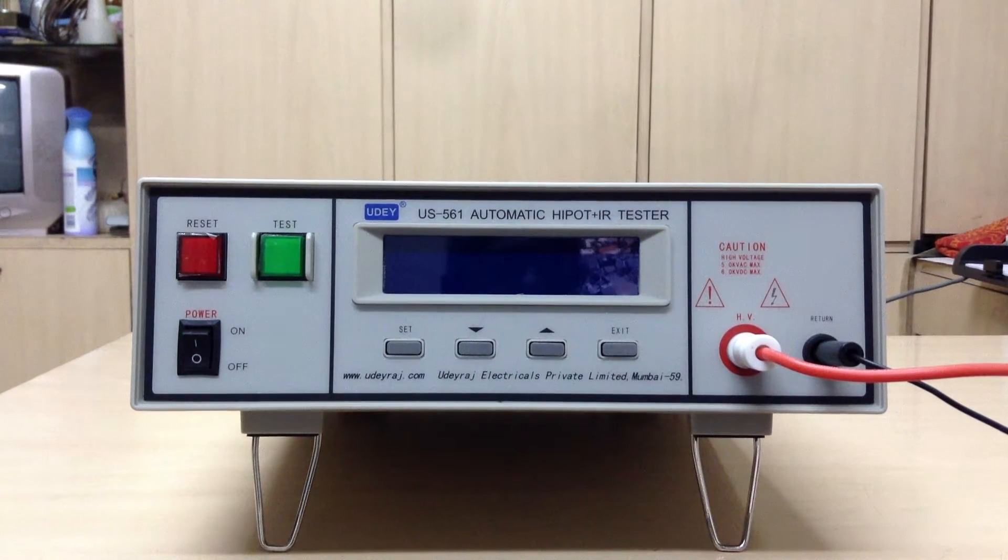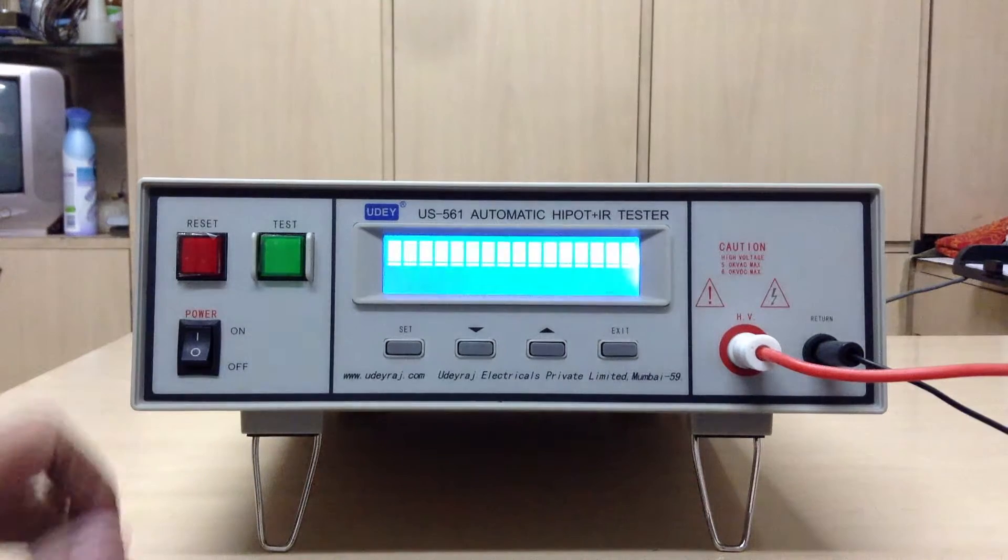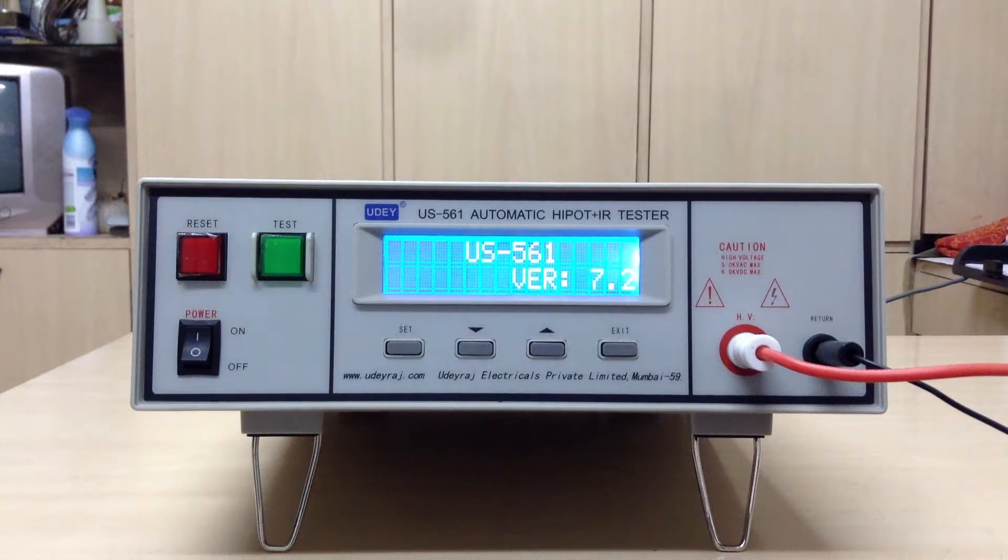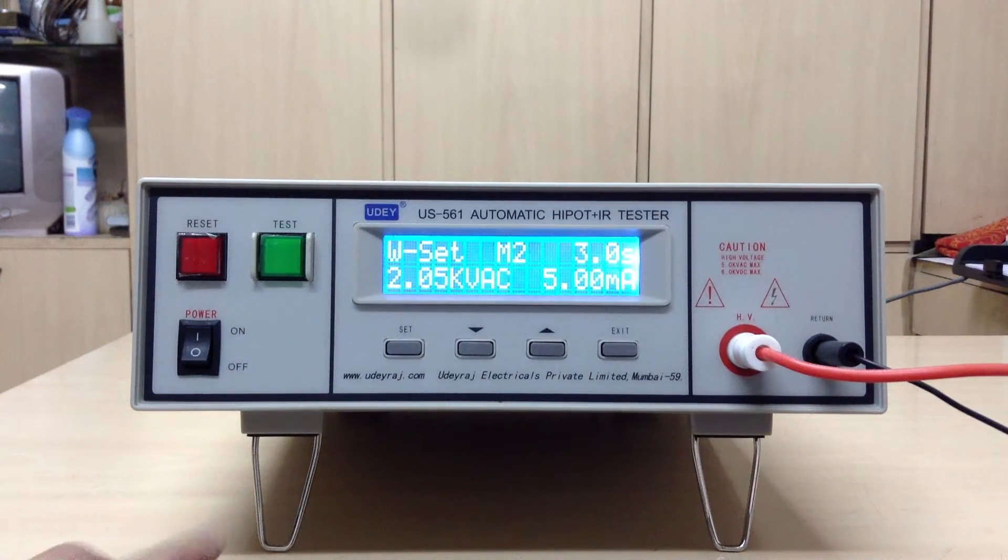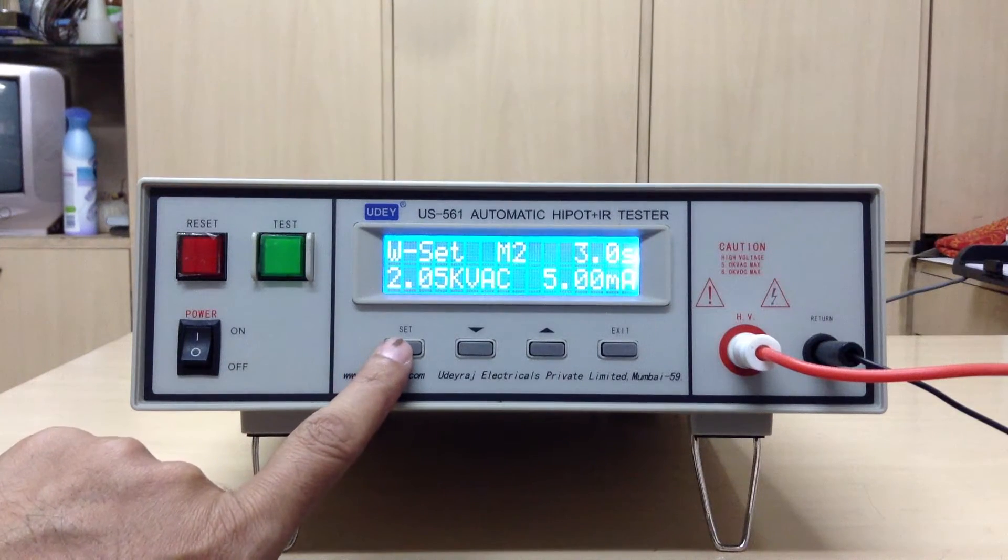Today we will take a demo on automatic hypodcom IR tester manufactured by Udayaj Electricals Private Limited, Bombay. When you switch on the main power, the display shows the last test parameter selected, and then you can start the selection by pressing set.